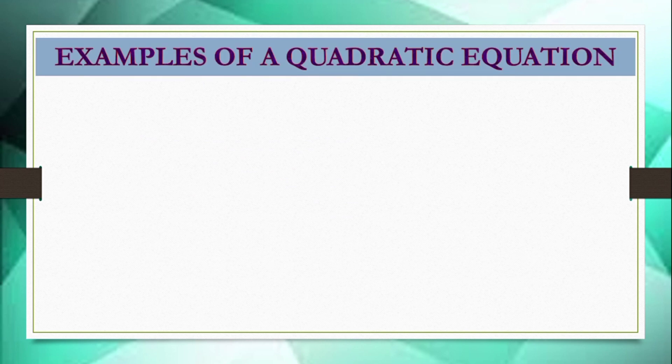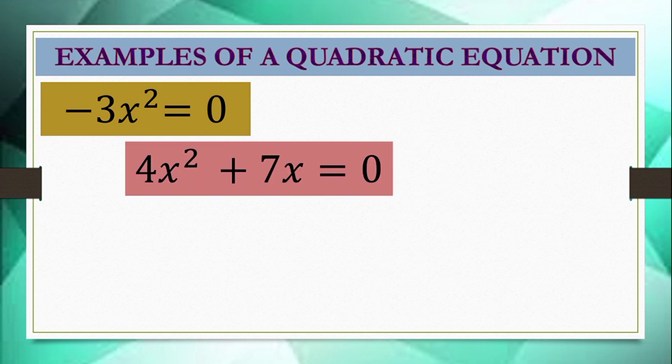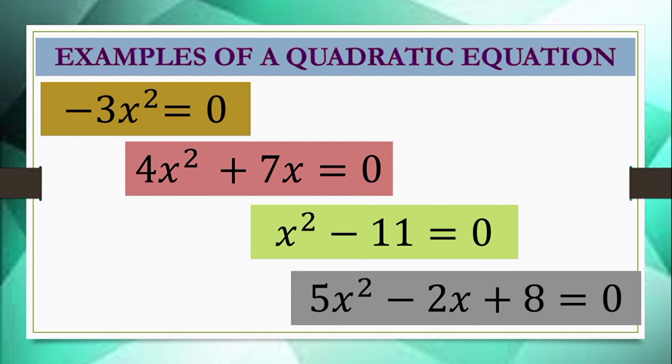Let's have some examples: negative 3x² equals 0; 4x² plus 7x equals 0; x² minus 11 equals 0; and 5x² minus 2x plus 8 equals 0. If we notice, these equations all have the highest degree of exponent, which is 2.